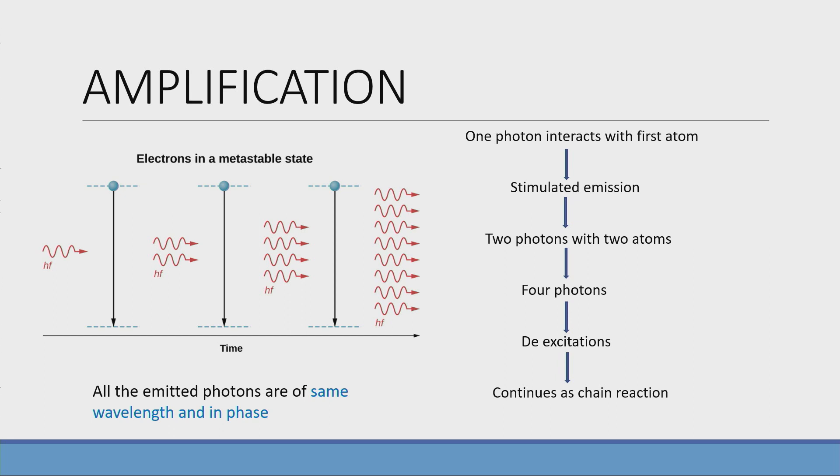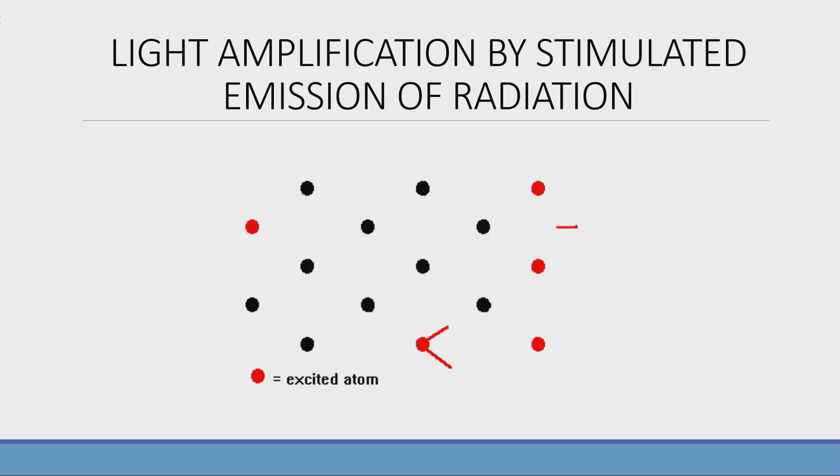Again, it strikes another two atoms, four are produced. Similarly, it continues as a chain reaction. So this is how amplification happens. Now coming back to the term, light amplification by stimulated emission of radiation.